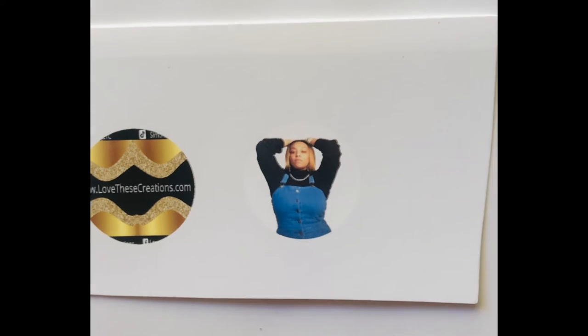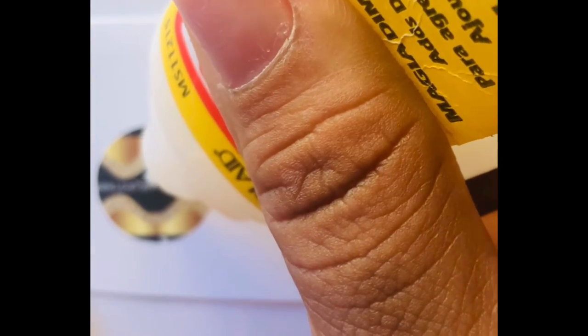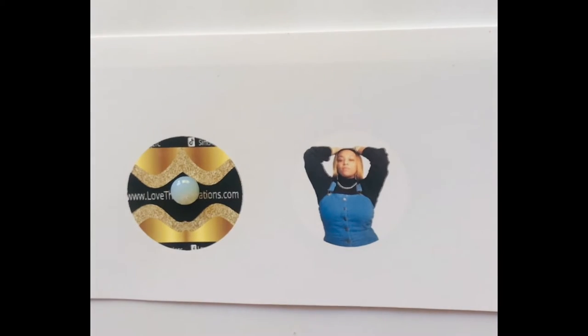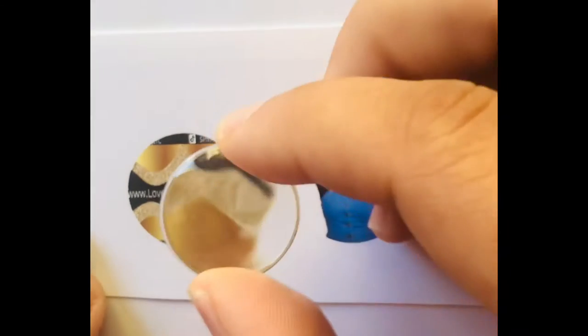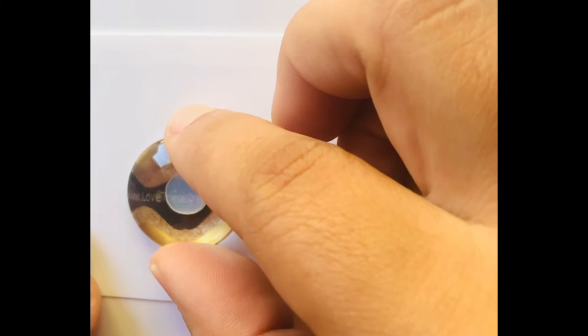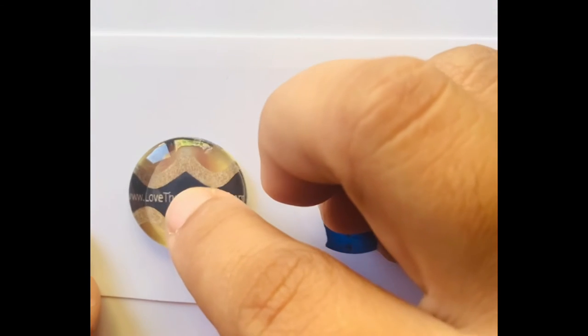So now our pictures are done, we're going to go ahead and grab our mod podge and put on a small amount. You don't need a lot and you don't want a lot because you don't want to get a lot of bubbles, but you want to make sure that you have full coverage underneath your glass.